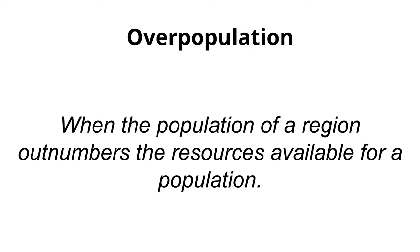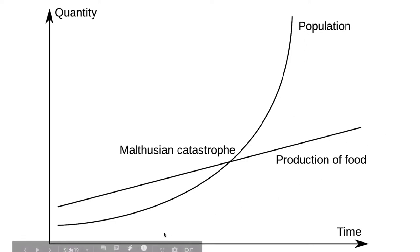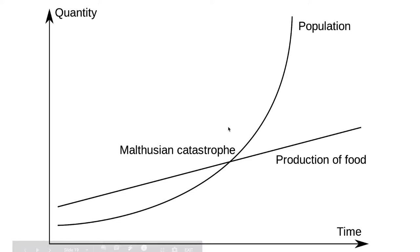Overpopulation occurs when the population of a region reaches a limit where the available resources are not enough for all the population. Thomas Malthus predicted that since food production was linear and population growth was exponential, we would eventually reach a Malthusian catastrophe — a point in time where we ran out of food.